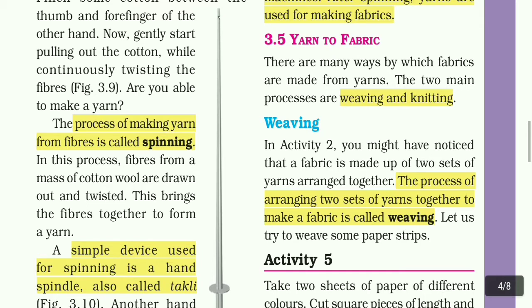Section 3.5: Yarn to Fabric. There are many ways by which fabrics are made from yarns. The two main processes are weaving and knitting. Two sets of yarn together make a fabric — one process is weaving and another is knitting.